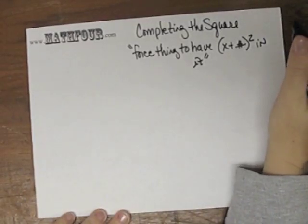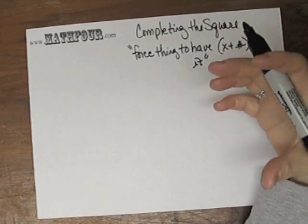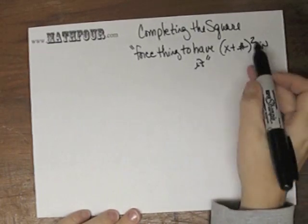We're talking about completing the square, which really means to force your expression to have some x plus a number squared in it.